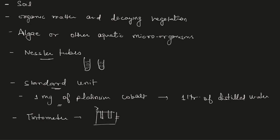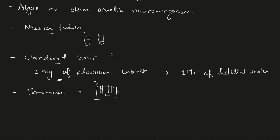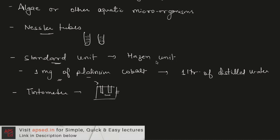And if it is not matching, then we replace the standard tube with another standard tube until the color of these two tubes match. So this standard unit, which is made with the help of this platinum cobalt in water, it is known as the Hazen unit. So Hazen unit is used to express the color.